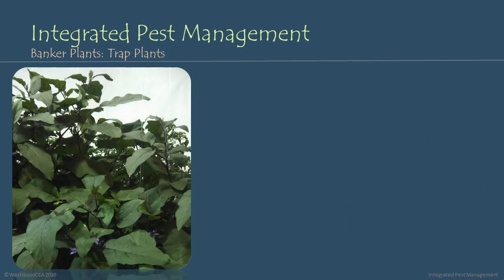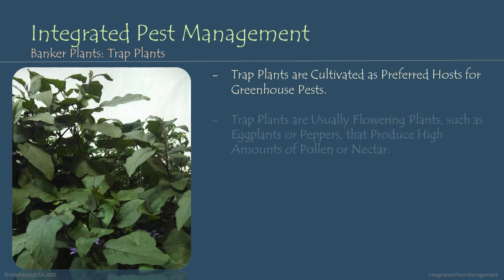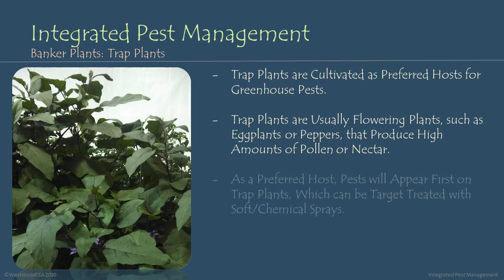Lastly, trap plants are a great addition to any media bed or growing environment. Trap plants are cultivated as a preferred host for common greenhouse pests. They are usually flowering plants such as eggplants or peppers that produce high amounts of pollen or nectar, and pests will typically appear first on the trap plants in your growing environment.